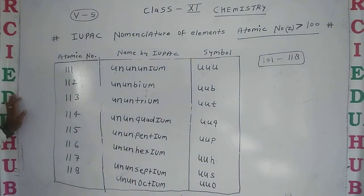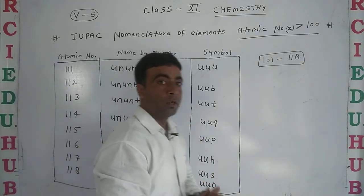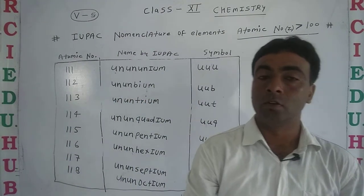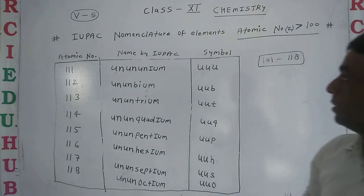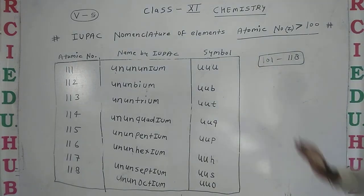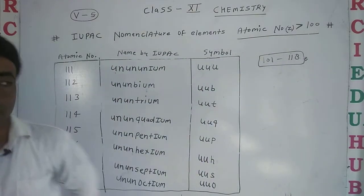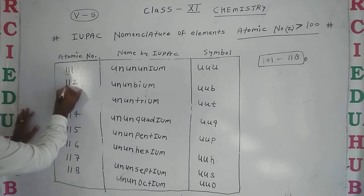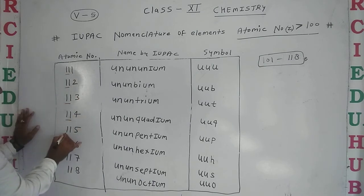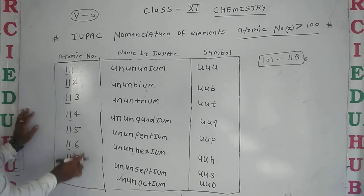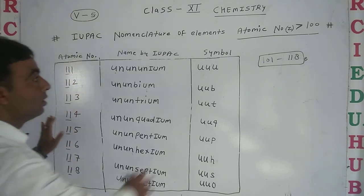Total 101 to 118 elements - IUPAC nomenclature is different compared to first hundred elements. These are given according to IUPAC using normal rules and these are systematic names according to IUPAC, which you can see easily in this part.